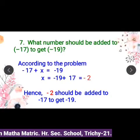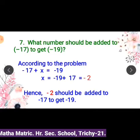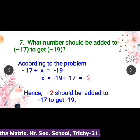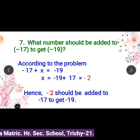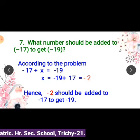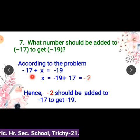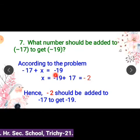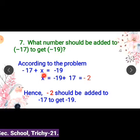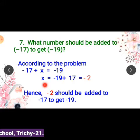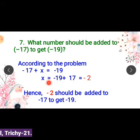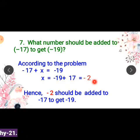7th sum: What number should be added to minus 17 to get minus 19? According to this problem, the statement is: minus 17 plus X equals minus 19, where X is an unknown number. So X equals minus 19 plus 17 equals minus 2.